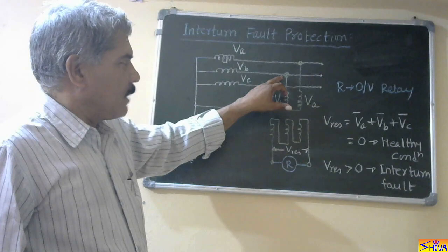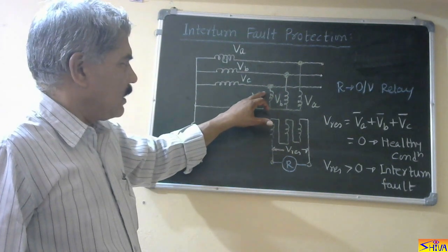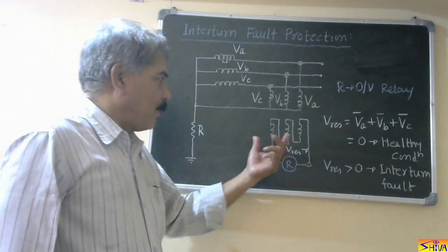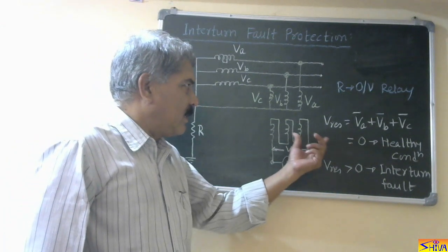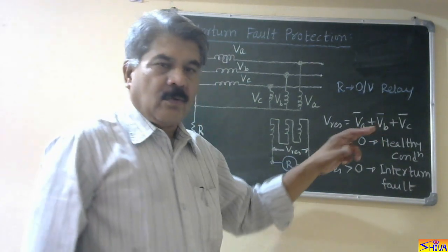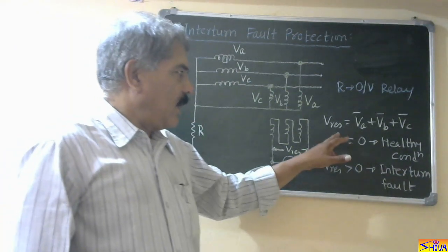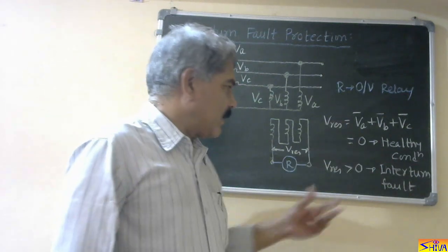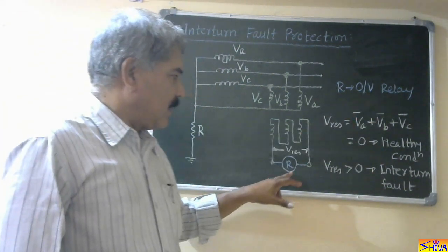Vb is the voltage measured between phase B and the neutral point. Similarly, Vc is measured between phase C and the neutral point. This is an open delta, so across this open delta, let us denote the voltage as V-residual. It will be Va plus Vb plus Vc. Under balanced conditions — that is when there is no fault — Va plus Vb plus Vc will be zero. That is the normal or healthy condition. Across this open delta, we connect an over-voltage relay, that is relay R.